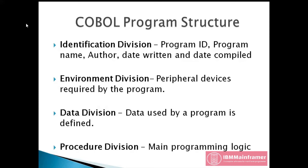Third division is the Data Division. The data division is where all of the data used by a program is defined. It is divided into five sections: the file, working storage, linkage, report, and communication sections. Although most programs only include the file and working storage sections, the data division is optional in a COBOL source program.